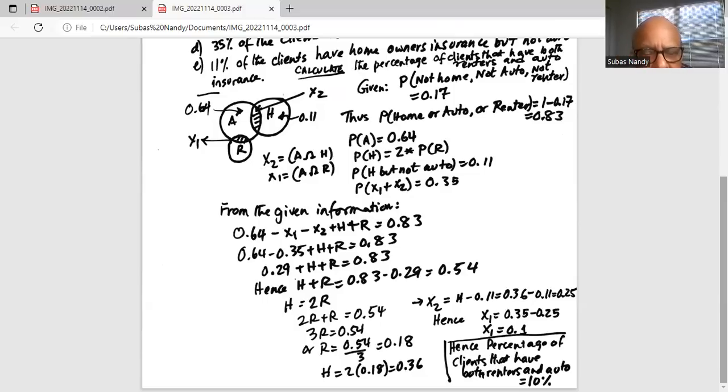And X1. Now we know X1 plus X2 is 0.35. So X1, which is equal to the intersection of auto and renters, equals 0.35 minus X2, which is 0.25. We get X1 equal to 0.1.